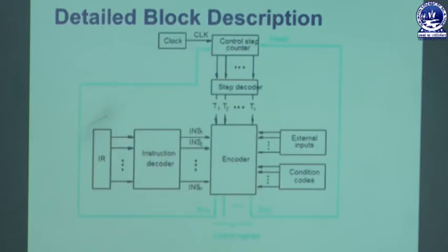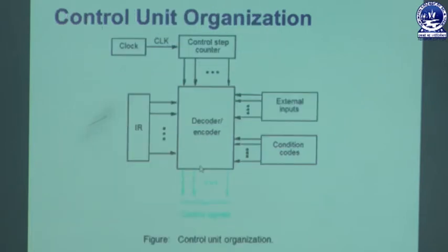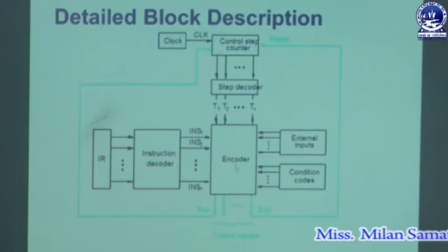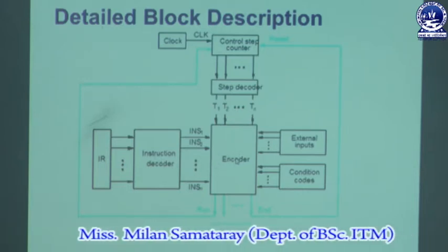The decoder-encoder block is a combinational circuit that generates the required control outputs depending on the state of all its inputs. The inputs are the content of IR, the content of the control step counter, the external input signals, and the condition code flags. By using these signals, it generates the control signals. The encoder and decoder circuit is divided into two separate circuits: one is the decoder circuit and another one is the encoder circuit.